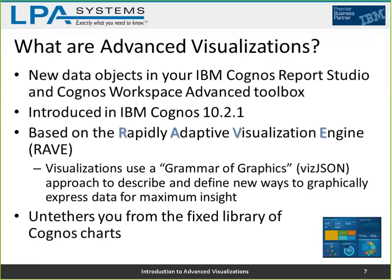They're not pre-rendered. Aficionados of active reports know that charts in active reports are pre-rendered and contained in the MHT file — not so with visualizations. Instead, the instructions for the visualization are embedded in the MHT and the RAVE engine is embedded in the MHT, so those visualizations are actually generated live when you run the active report. This also introduces the ability to add animations into the visualizations.